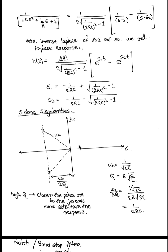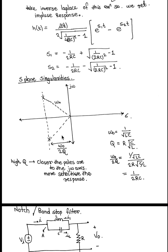For the location of zeros and poles on the s-plane, our poles are ω₀/2Q distance away from the imaginary axis. Poles are the values of s where H(s) goes to infinity, and zeros are the values of s where H(s) is equal to zero. For the low pass filter, the zeros are at infinity.